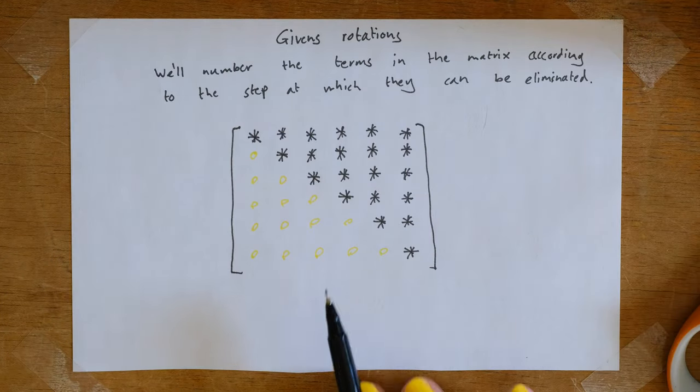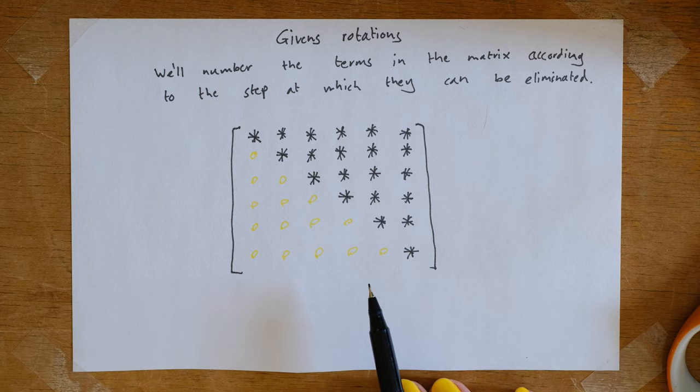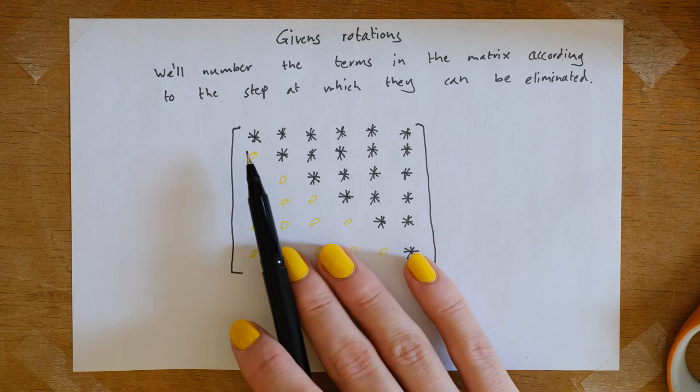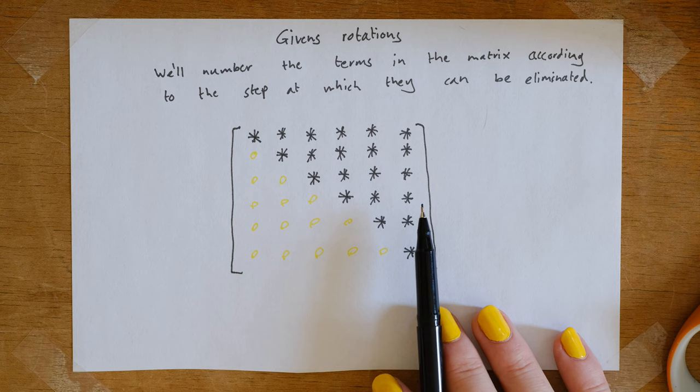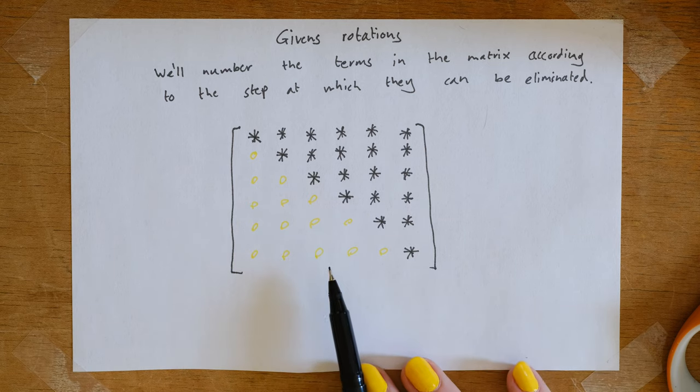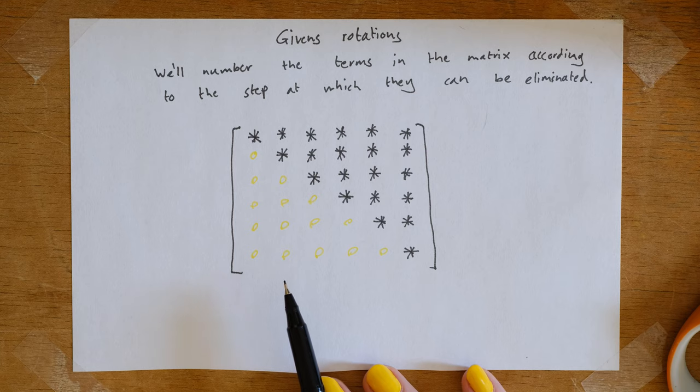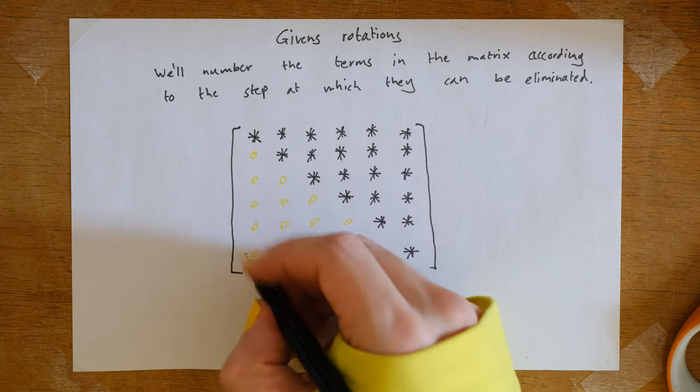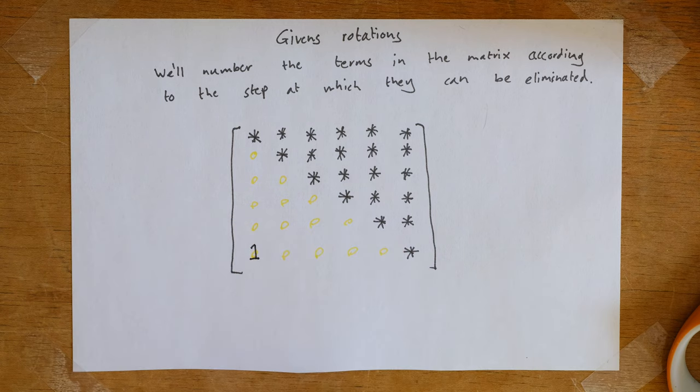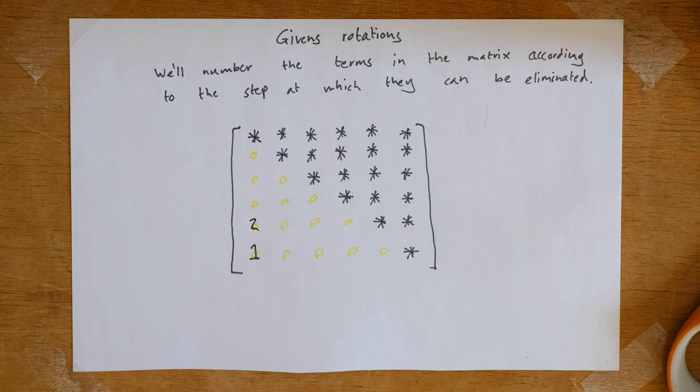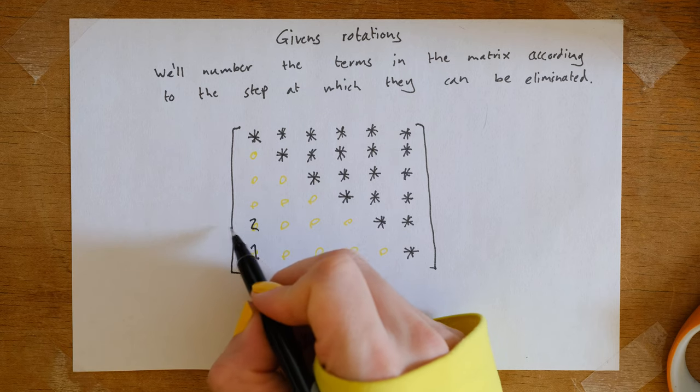Now, another advantage for Givens rotations is in terms of parallelization. Let's look at this matrix that's 6 by 6, and I've marked the terms in the upper diagonal matrix with stars, and the terms below the diagonal that we want to eliminate as yellow circles. Now, let's look at the order at which we can consider eliminating terms in this matrix. To begin with, we'll eliminate this term on step 1 by considering the 5th and 6th rows. After we've eliminated that term, we could eliminate the term above it in step 2 by considering the 4th and 5th rows.